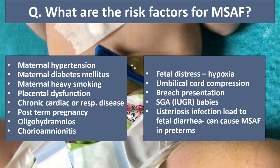Fetal risk factors include fetal distress leading to hypoxia, umbilical cord compression, breech presentation, IUGR and small for gestational age babies. In preterm babies, listeriosis infection can cause fetal diarrhea, which is one cause of meconium-stained amniotic fluid in preterm neonates. Otherwise, meconium-stained amniotic fluid is seen in term or post-term babies. If present in a preterm baby, listeriosis and chorioamnionitis must be ruled out.